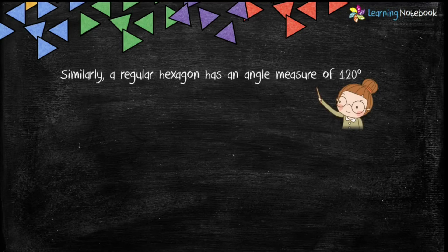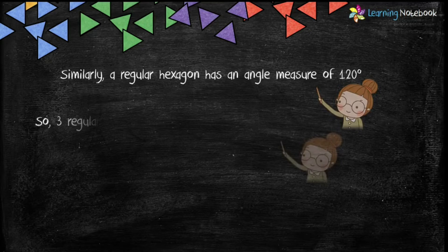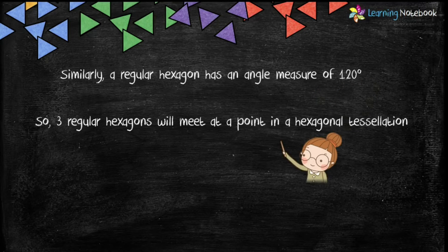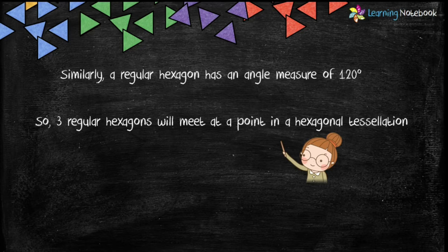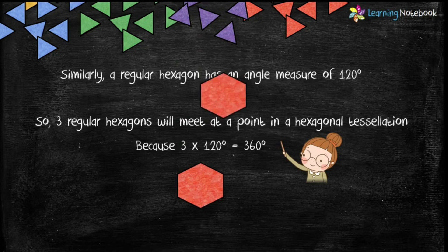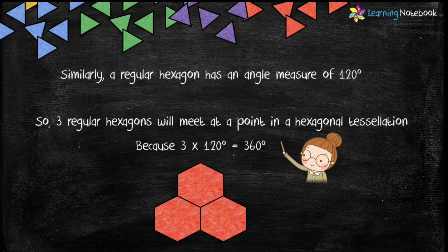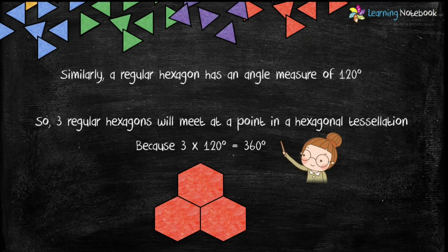Similarly, a regular hexagon has an angle measure of 120 degrees. Therefore, three regular hexagons will meet at a point in a hexagonal tessellation as shown here. Because 3 into 120 degrees equals to 360 degrees.